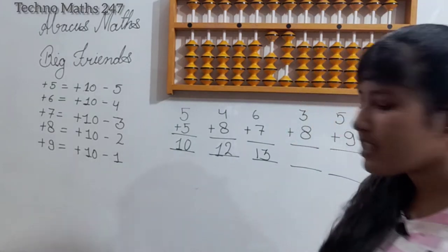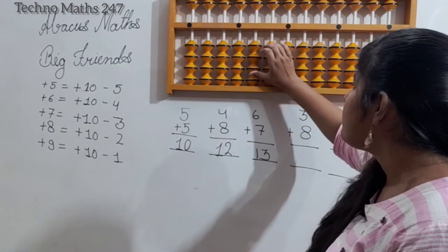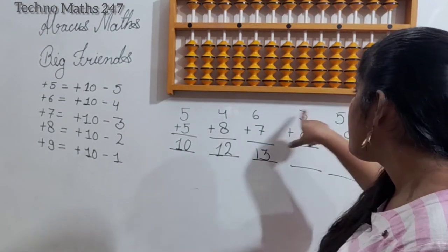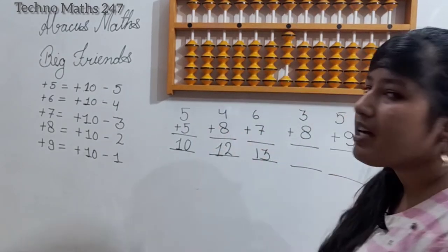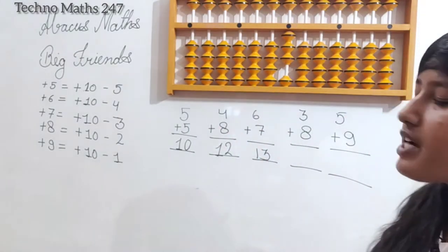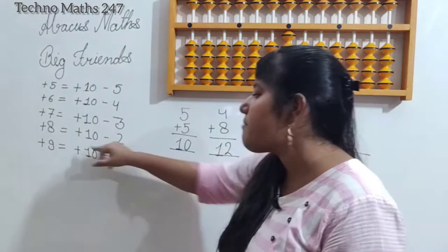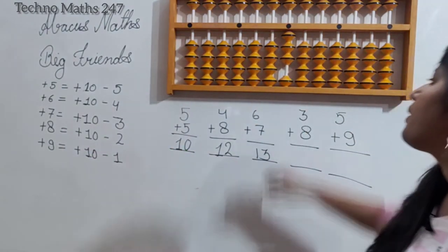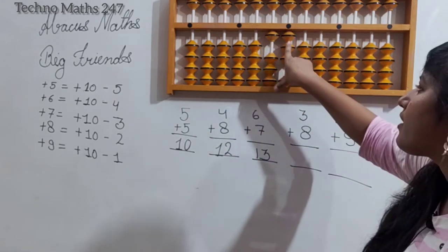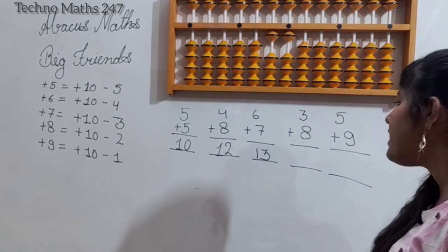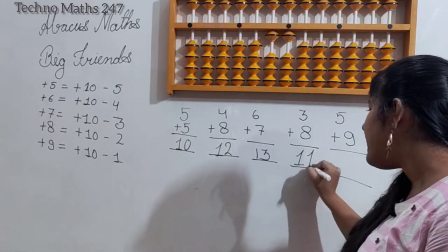Next question: 3 plus 8. We enter 3, but we only have 6 remaining — we don't have 8. So we use the big friend: plus 10 minus 2. We apply plus 10 minus 2, and the answer is 11.